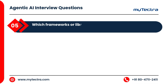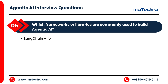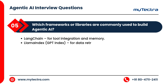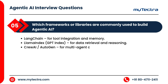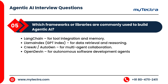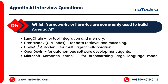Which frameworks or libraries are commonly used to build agentic AI? LangChain, for tool integration and memory. LlamaIndex, or GPT Index, for data retrieval and reasoning. CrewAI, or Autogen, for multi-agent collaboration. OpenDevin, for autonomous software development agents. Microsoft Semantic Kernel, for orchestrating large language model functions.